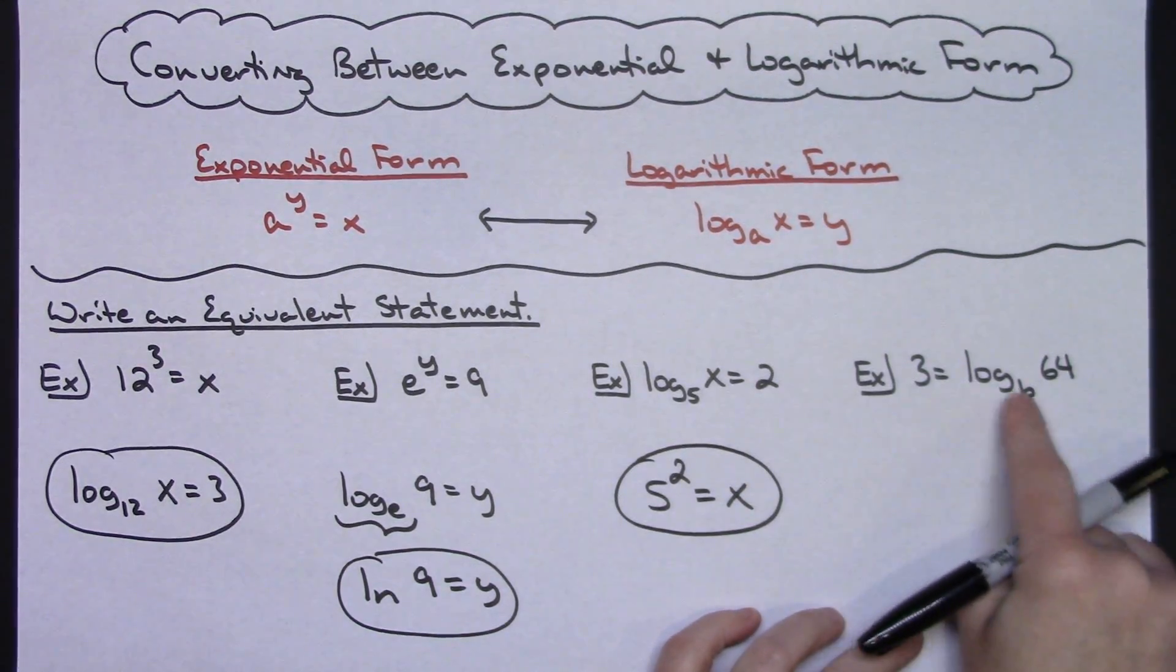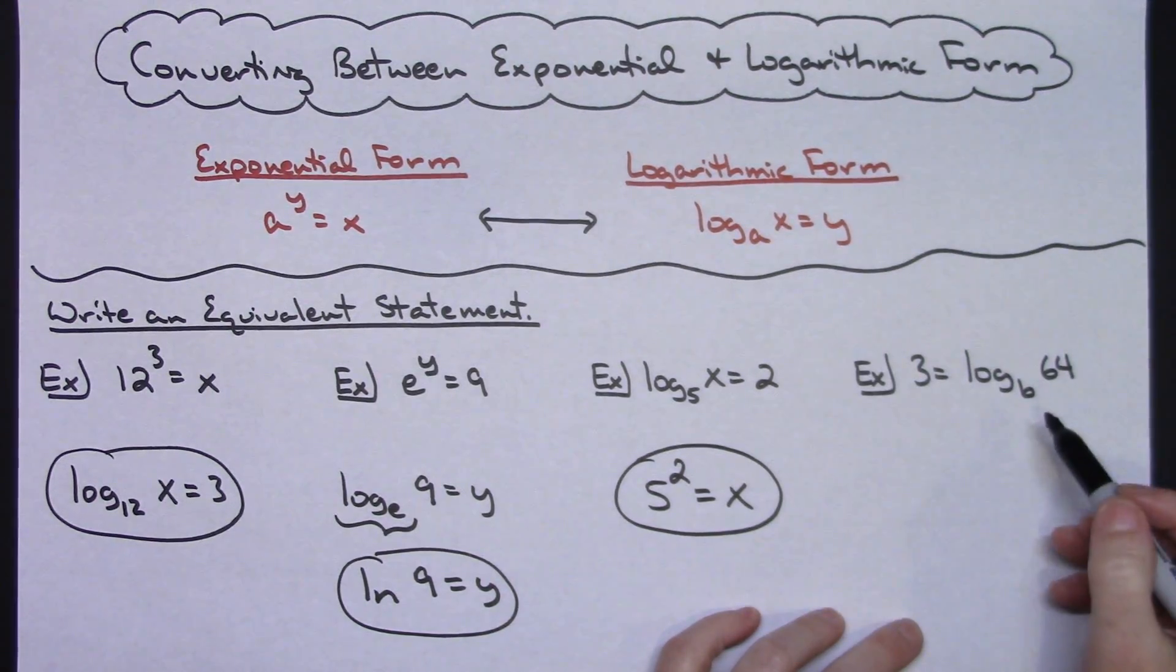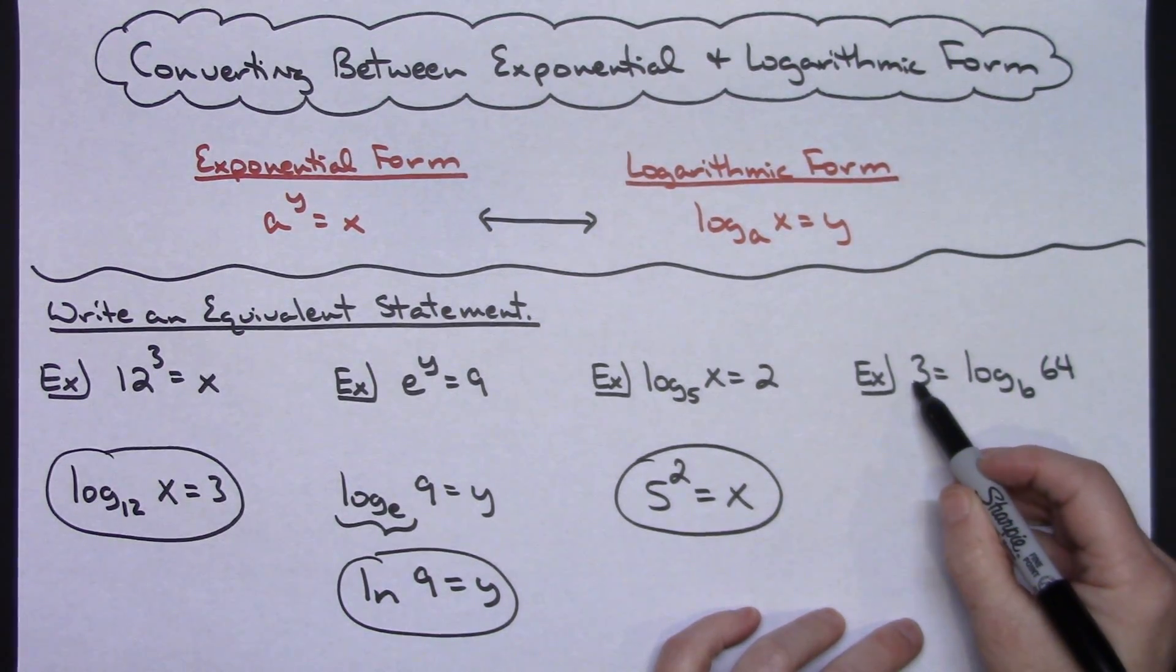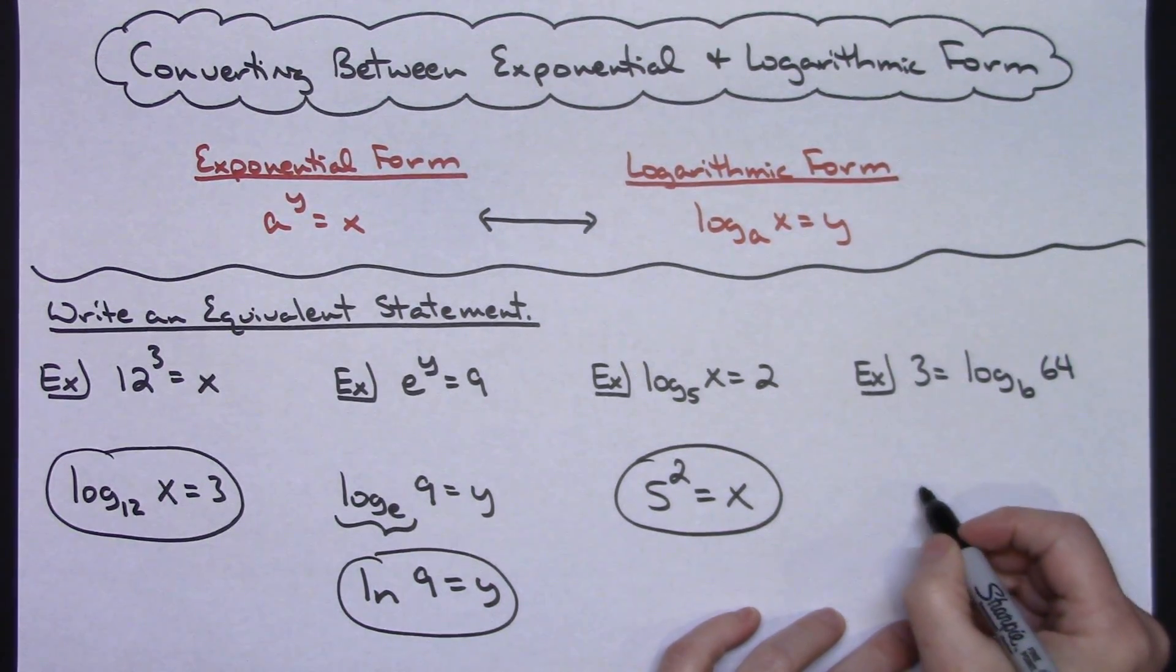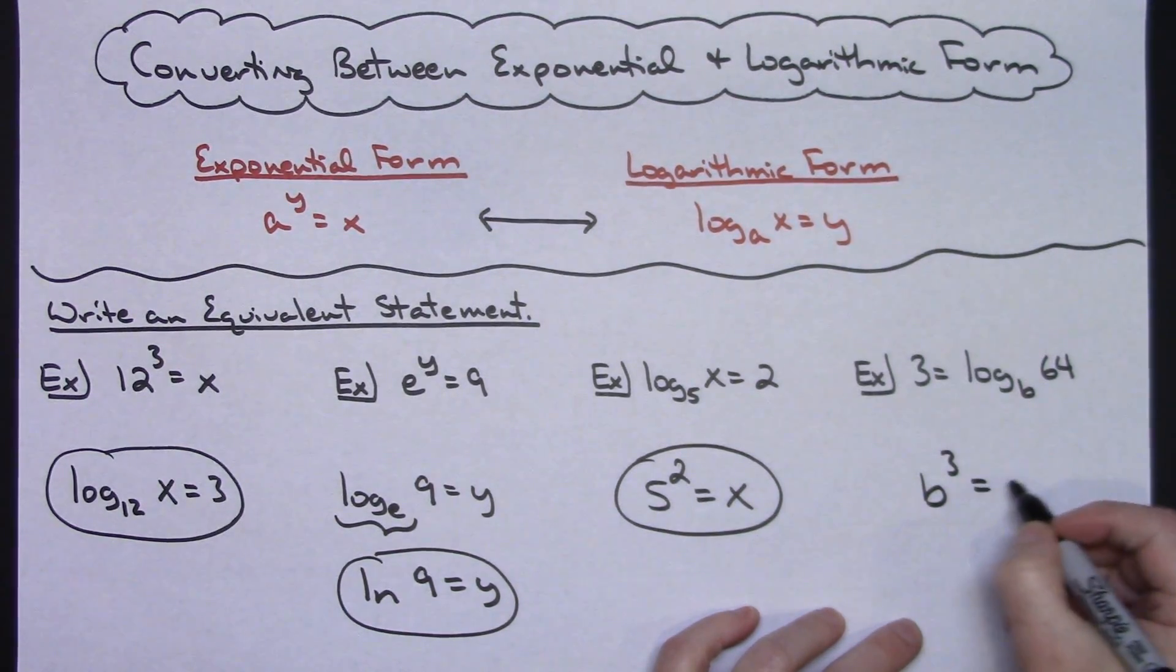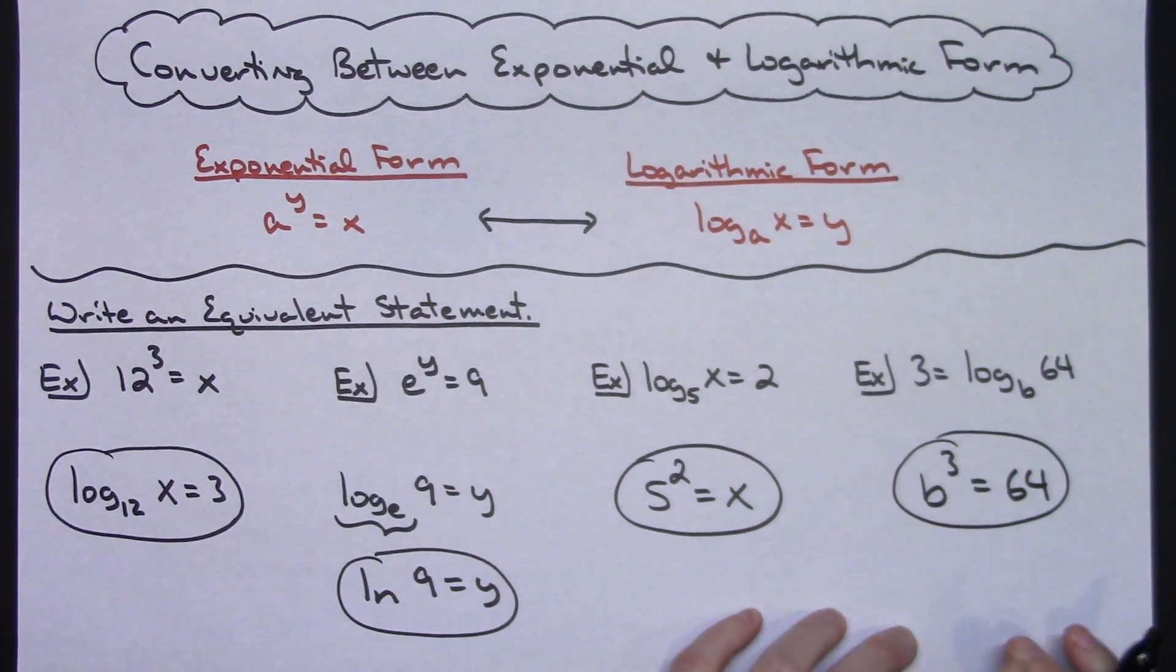And in the last example, even switching this around, it doesn't make any difference whether the log is on the right or left. I still here have a base of b. The answer is going to be the exponent and then 64. So this would be written as b raised to the third equals 64. So just four quick examples there of going back and forth between exponential and logarithmic form.